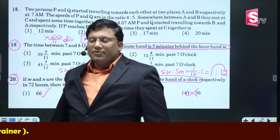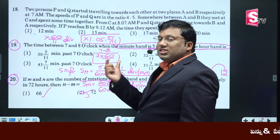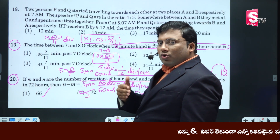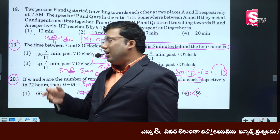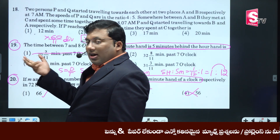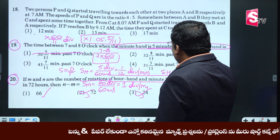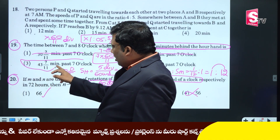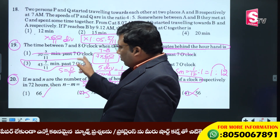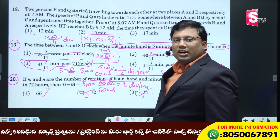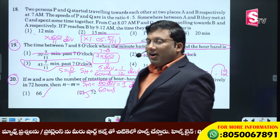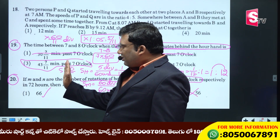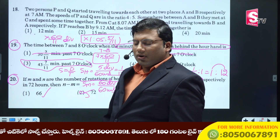In other words, it will be 7 into 60 by 11. Like it'll be running for about 25 hours — that means it equals 48 minutes. The answer is 43.7 by 11 minutes past 7 o'clock.